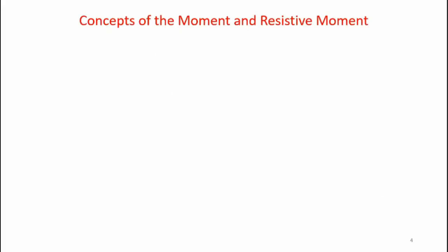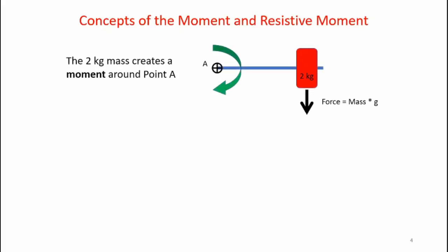Now let's take a look at the concept of a moment and what I mean by a resistive moment. In this graphic I depict a moment. I've got a two kilogram mass which if I multiply that mass times acceleration of gravity I get a downward force. It's attached to a beam which is then attached to a rotation point, point A. Now that downward force acting at a distance from point A creates a clockwise moment. It wants to make the system rotate in the clockwise direction.